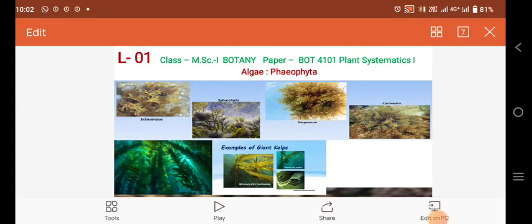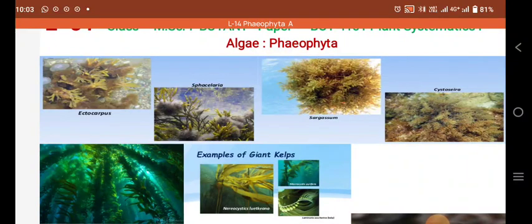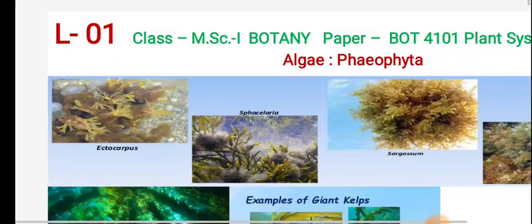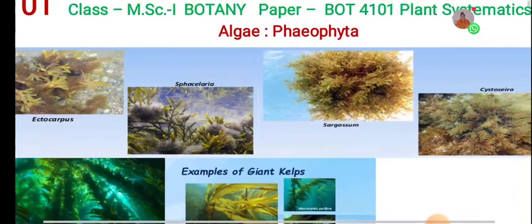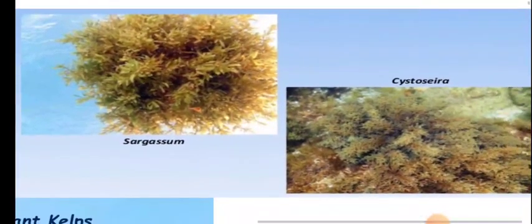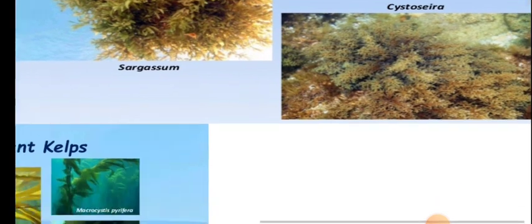Good morning. We are starting our next division, Phaeophyta. Phaeophyta members are commonly found in marine water. We are observing good photographs of different genera. Firstly, Ectocarpus is one well-known genus from Phaeophyta, then there is Sphacelaria, which is also a very good genus. We are also knowing about Sargassum — this is a natural photograph of Sargassum. Cystoseira is also a brown algae member.